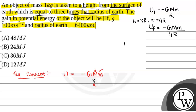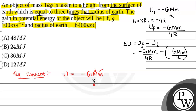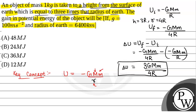Therefore, the gain in potential energy ΔU will be given by final potential energy minus initial potential energy, that is -GMm/4R minus (-GMm/R). On solving this, we get ΔU = 3GMm/4R. This will be the change in potential energy.